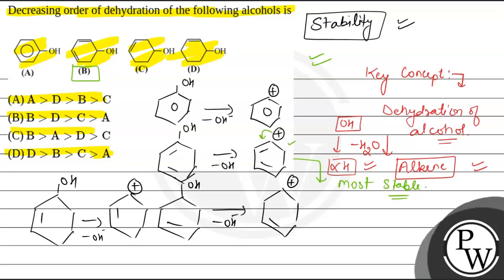Because here the positive charge is being in conjugation with two adjacent double bonds. Then after this, the next stable carbocation is of option D. Why? Because again, it is in conjugation with the double bond.